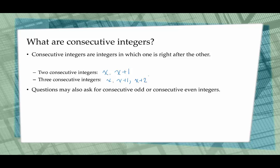Questions might also ask for consecutive odd or consecutive even integers. Two consecutive odd numbers would be 7 and 9, or negative 19 and negative 17. Two consecutive even integers would be 8 and 10, or negative 20 and negative 18.